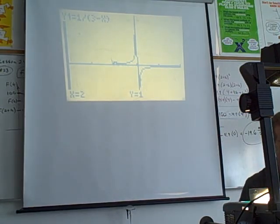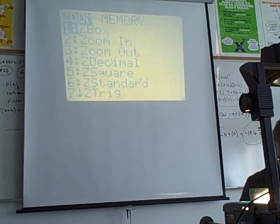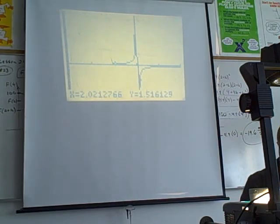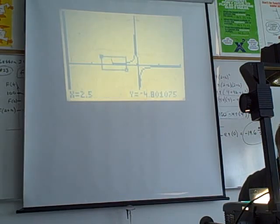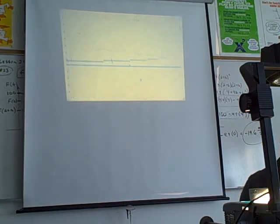We may even want to do a zoom box around that. Let's do that. Zoom, enter. I'm going to do a zoom box around that point. So I'm going a little left, a little up. Push enter. I've got to make sure I get that point (2, 1) in the graph. Enter. I'm going to hit trace, 2, enter.